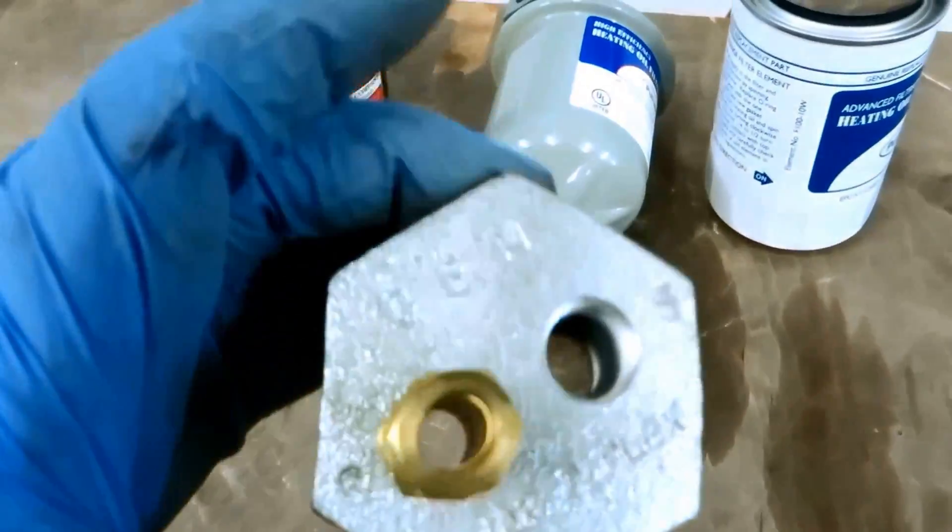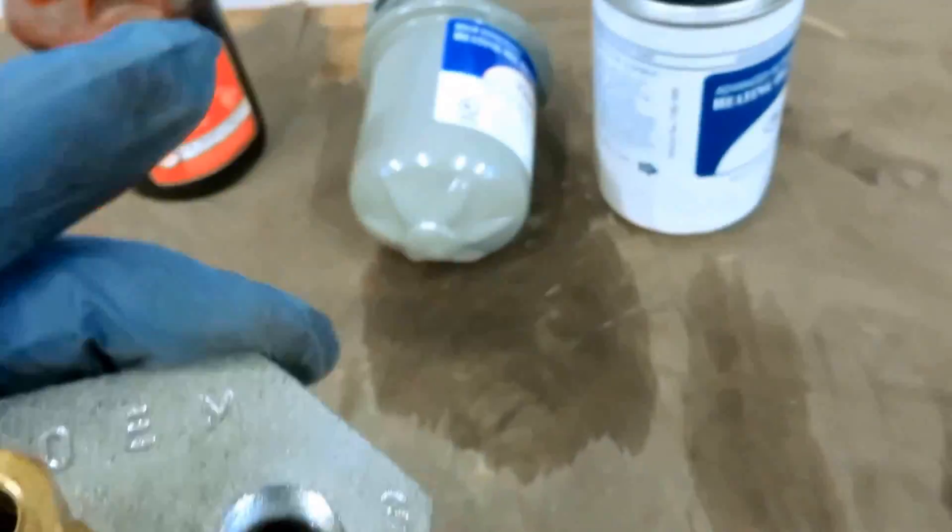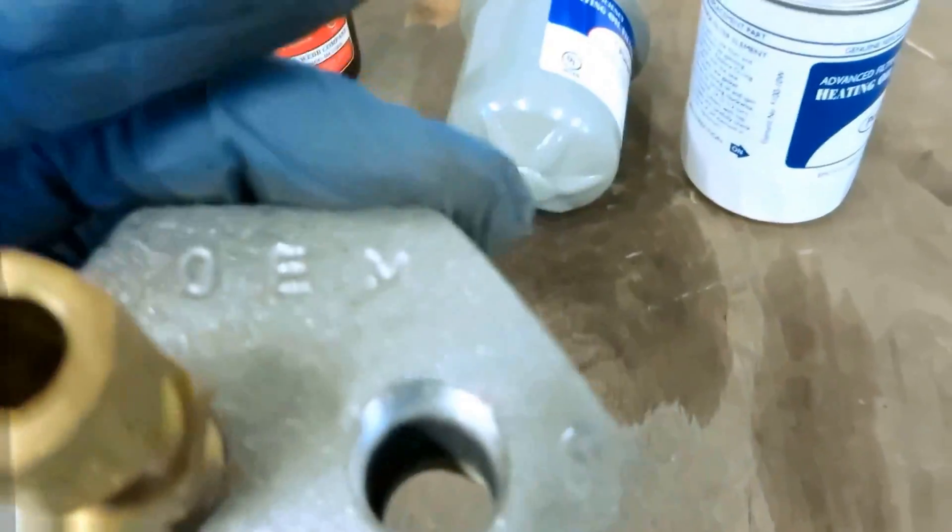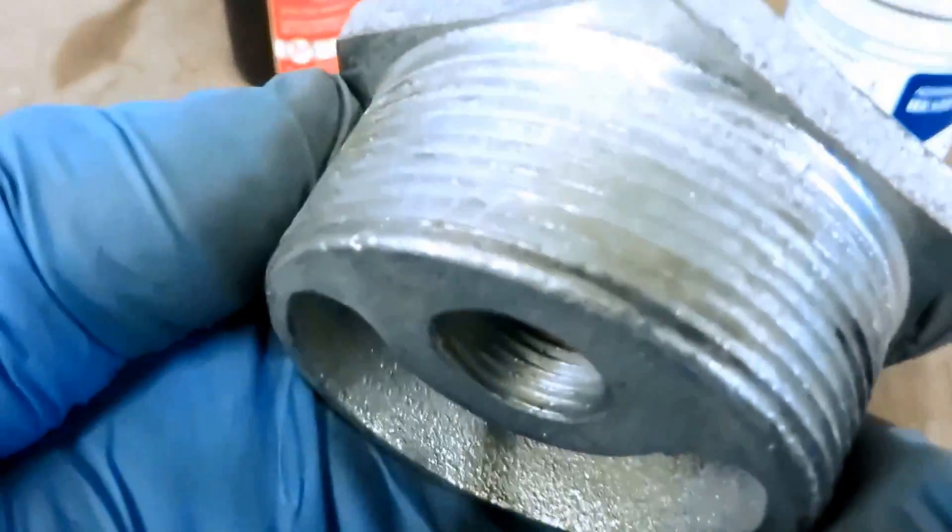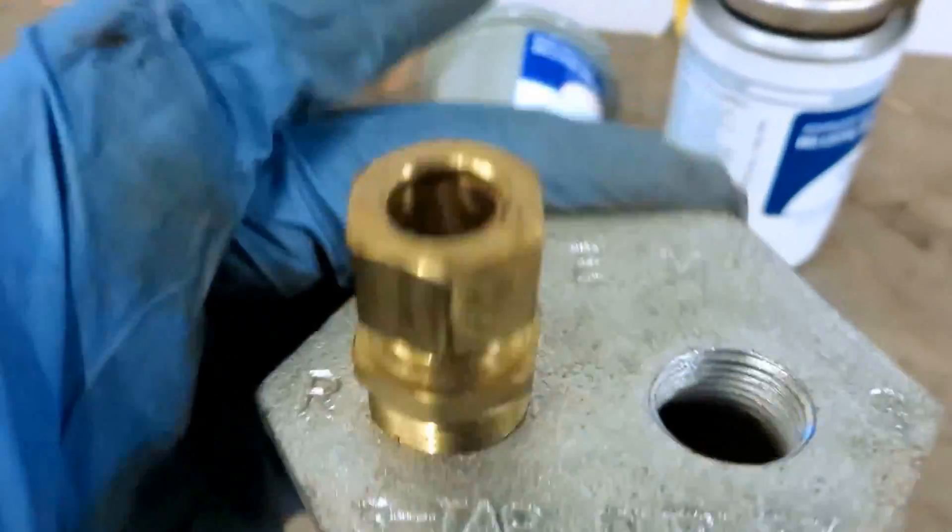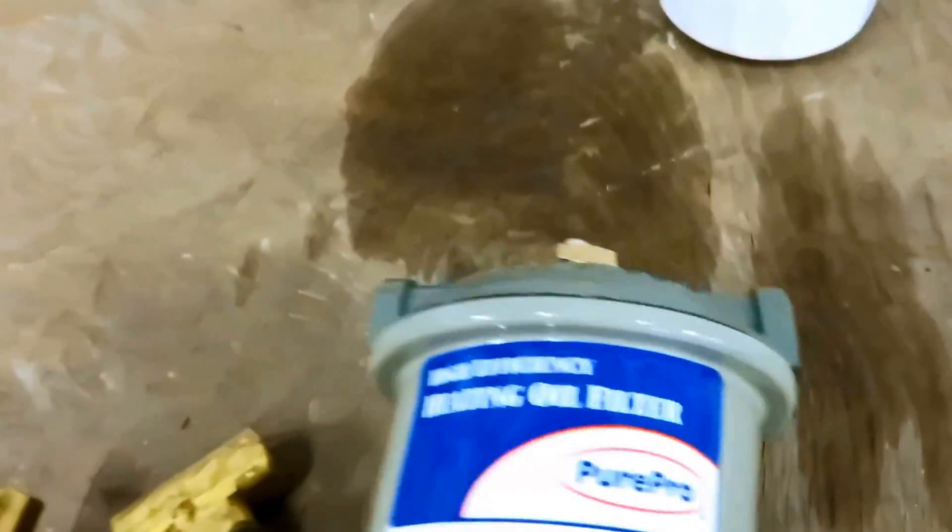On the two-pipe system they got what they call a duplex fitting. You could look at this, it's got two tappings on the top which are three-eighths. Then on the bottom it's got one three-eighths tapping and this is two-inch. This would go on the top of the tank. What you would do is you'd come out the top of the tank through a firematic, through a filter.